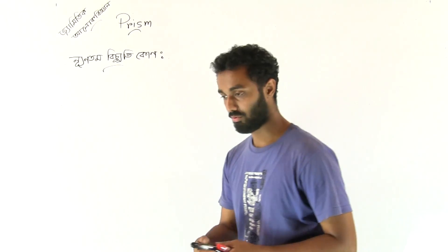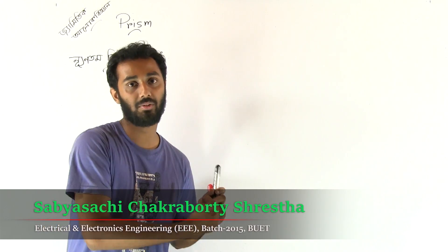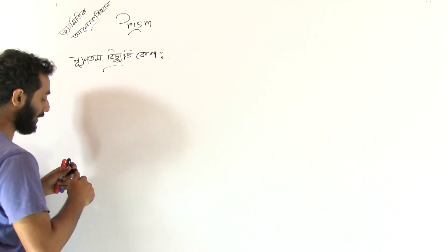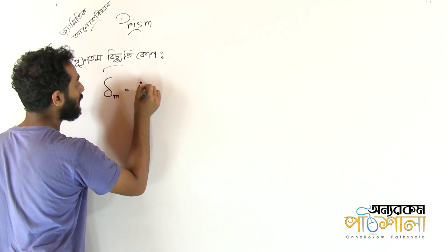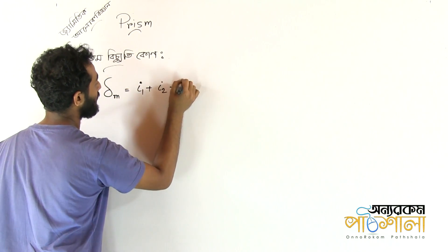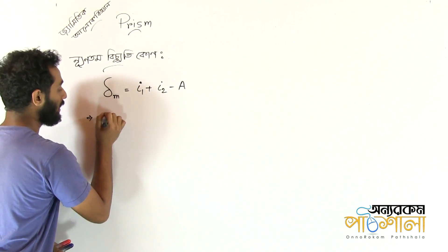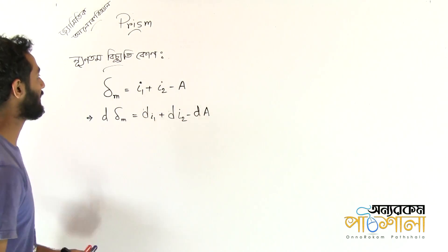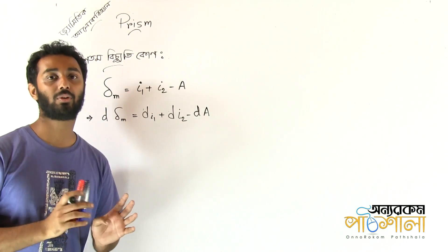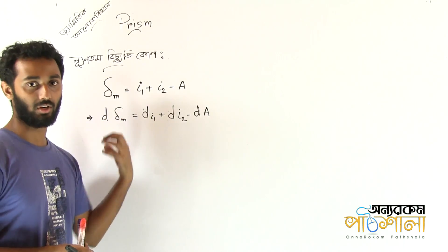The deviation δM is equal to I1 plus I2 minus A. We will see the different pieces: dδM equals dI1 plus dI2 minus dA. The idea is that when we apply calculus, we minimize δM by setting dδM to zero.